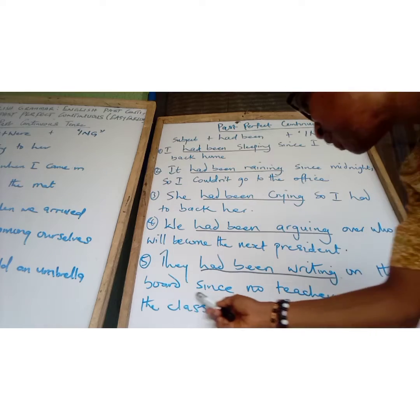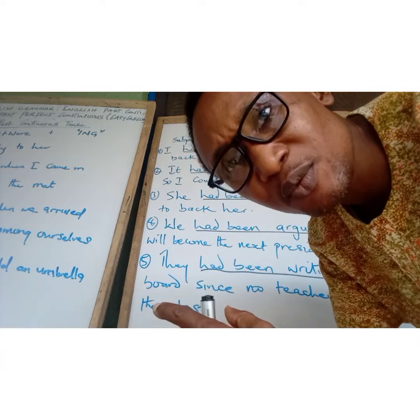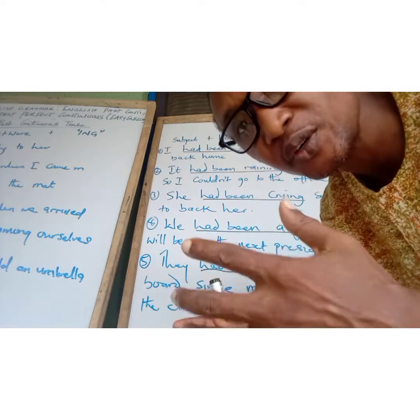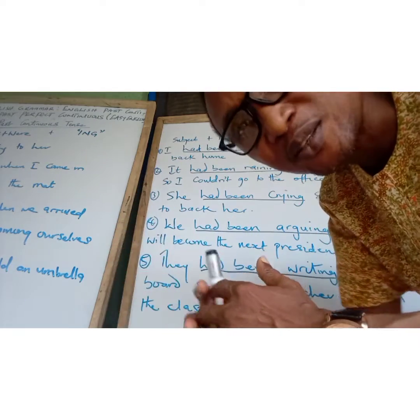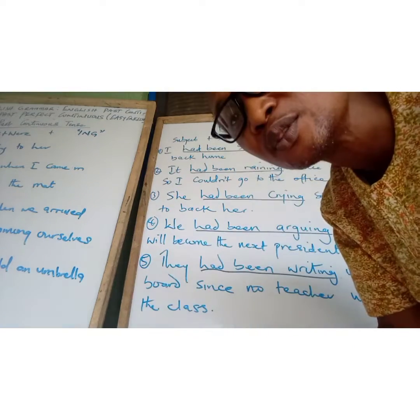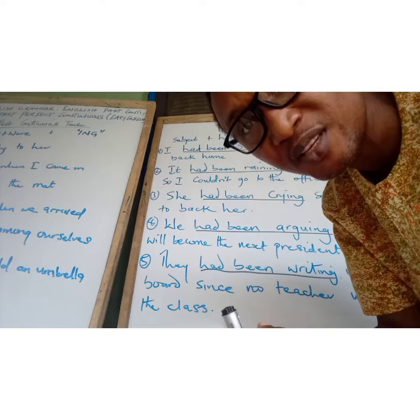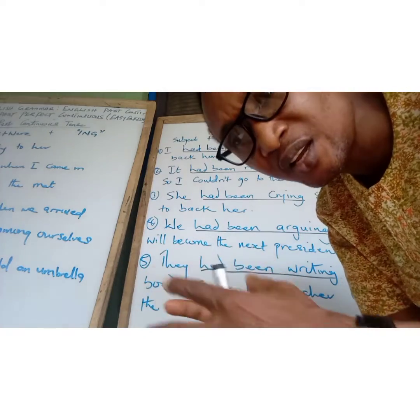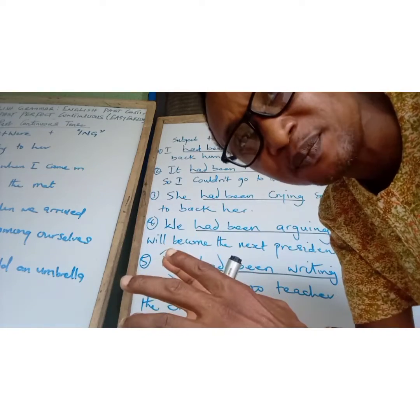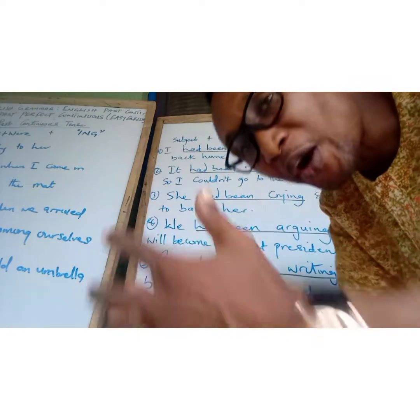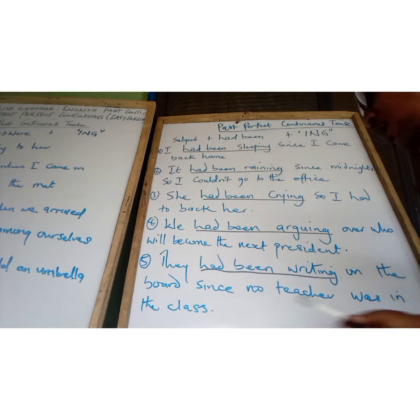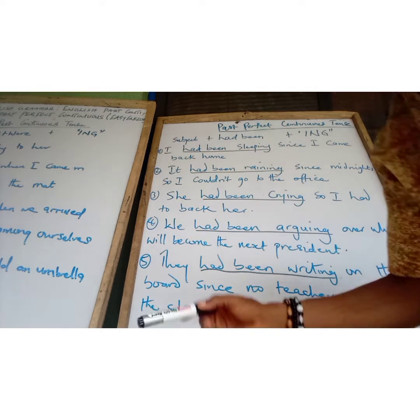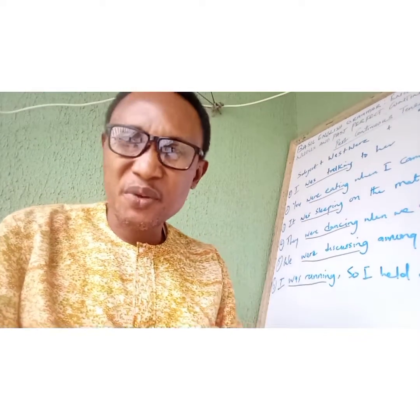Then the next one: 'They had been writing on the board since no teacher was in the class.' What the students did was start teaching each other — they went to the board and one of them was explaining mathematical concepts because there was no teacher around. They realized the teachers were having a critical meeting, so they organized themselves and started teaching each other. 'They had been writing on the board since no teacher was in the class.'